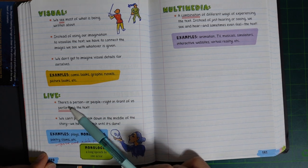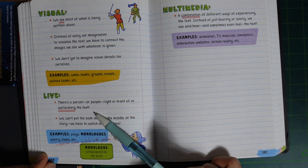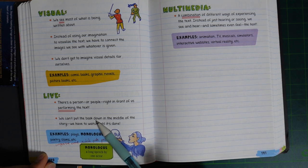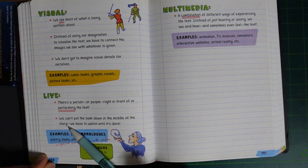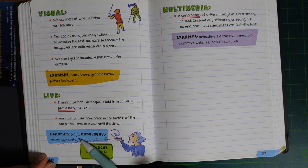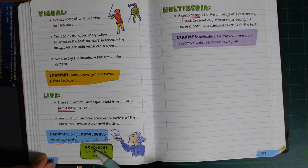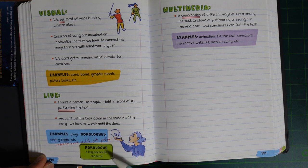Live: There's a person or people right in front of us performing the text. We can't put the book down in the middle of the story. We have to watch until it's done. Examples: Plays, monologues, poetry slams, etc. Monologue: A long speech by one actor.